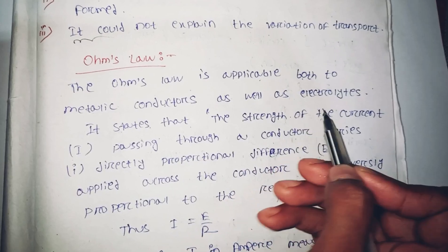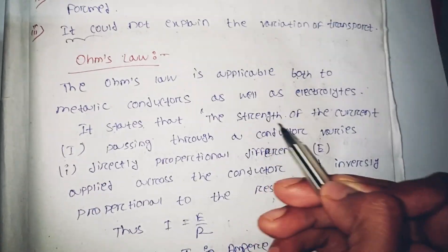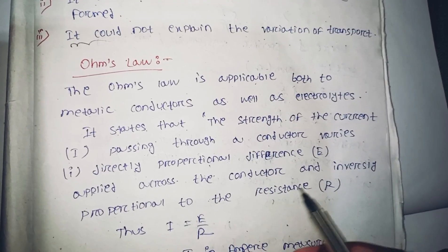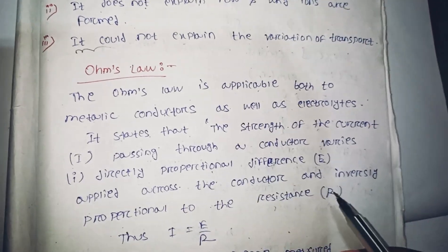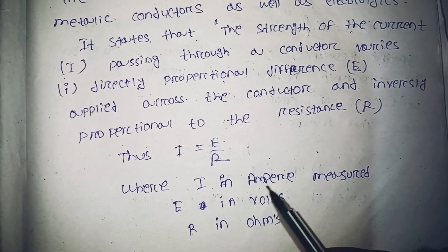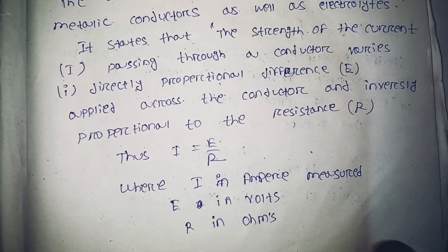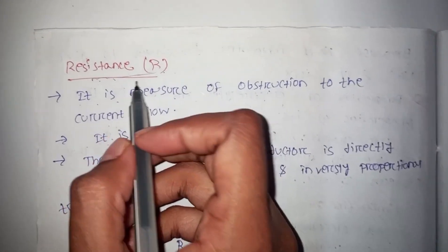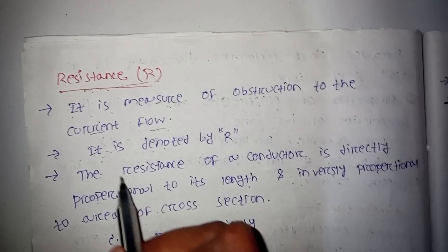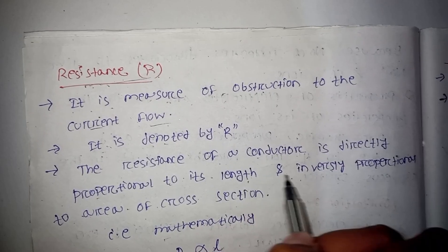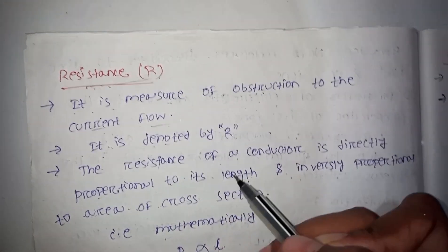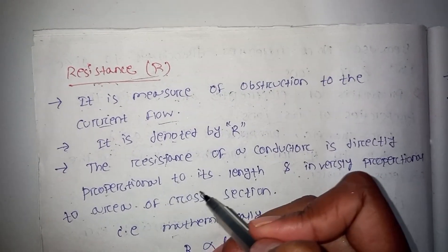The strength of the current passing through a conductor is directly proportional to the potential difference applied across the conductor and inversely proportional to the resistance. Resistance is denoted by R, and it is directly proportional to the length of the conductor and inversely proportional to its area of cross-section.